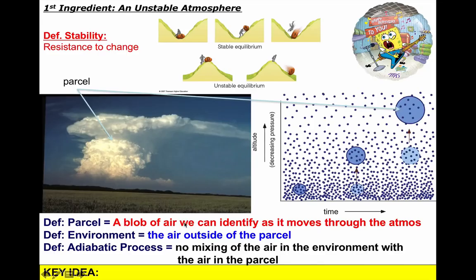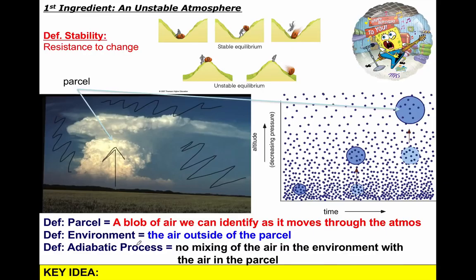A parcel is a blob of air — a chunk of air that we can identify as it moves throughout the atmosphere. What makes up this thunderstorm is either one big giant parcel of air or a whole bunch of smaller parcels all being forced to rise. What's very unique about parcels of air in our atmosphere is that they tend not to mix well with their environment — that's why a cloud can remain a stand-alone thing with a very defined edge.